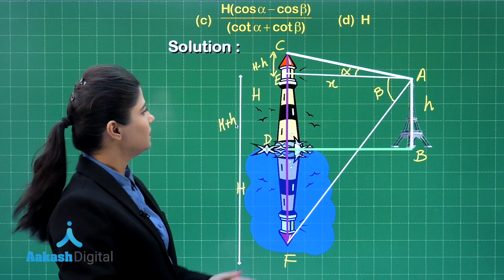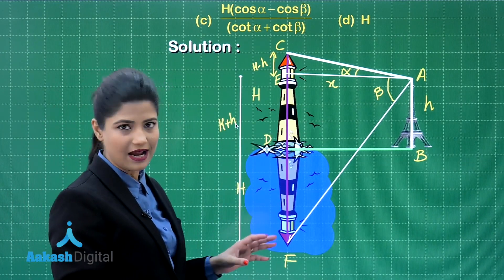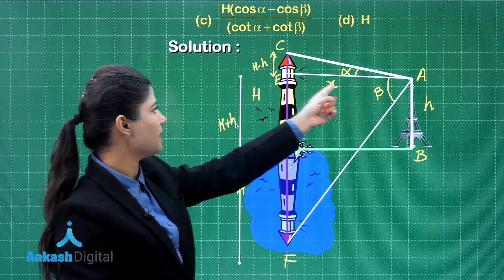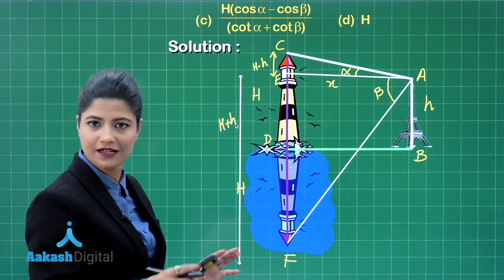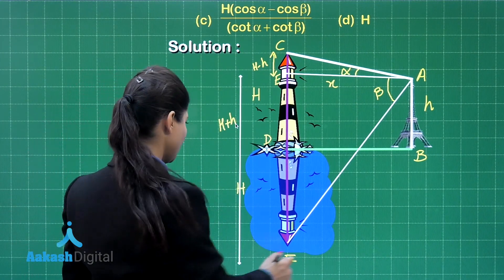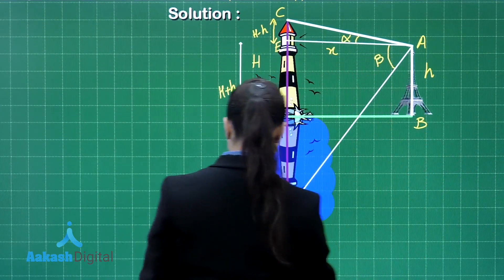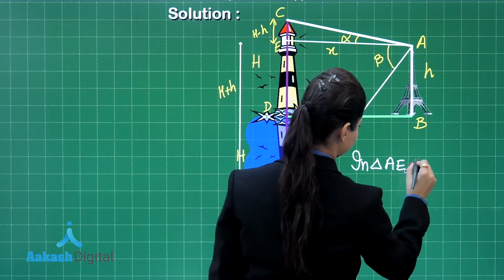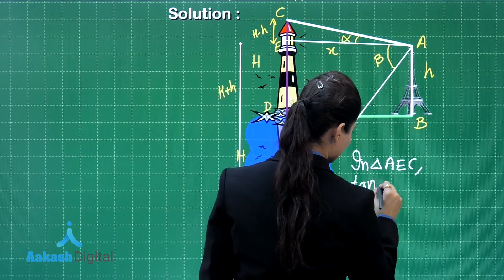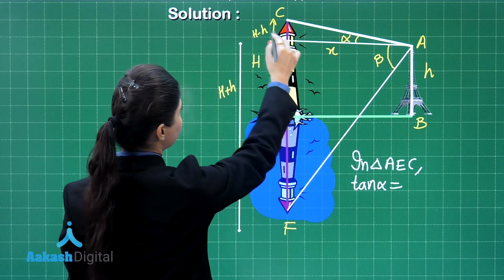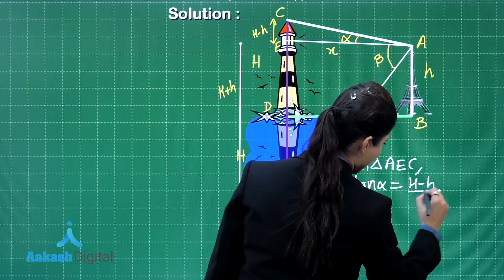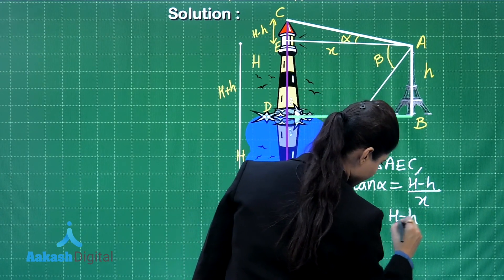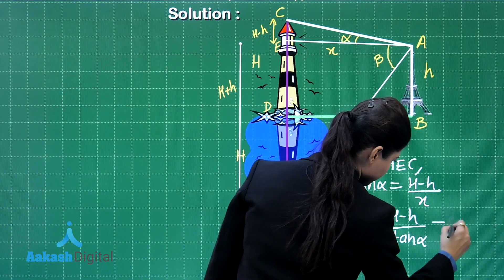Consider triangle AEC. The angle at A is alpha. For this angle, CE is the perpendicular equal to capital H minus small h, and the base AE is x. Applying tan alpha: tan α equals (H minus h) upon x, giving x equal to (capital H minus small h) upon tan alpha. Let this be equation number 1.